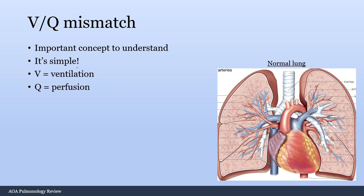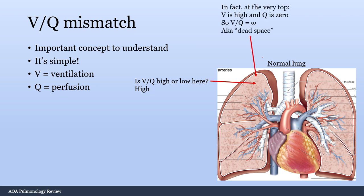VQ mismatch is a very important concept. V equals ventilation, Q equals perfusion. In a normal lung, the apex has high ventilation but low perfusion because blood pressure can't easily reach that height against gravity — so the VQ ratio is high. At the very apex, ventilation is high with zero perfusion, making VQ infinity — that's called dead space. At the base, both ventilation and perfusion are high, but the large denominator gives a relatively lower VQ ratio.